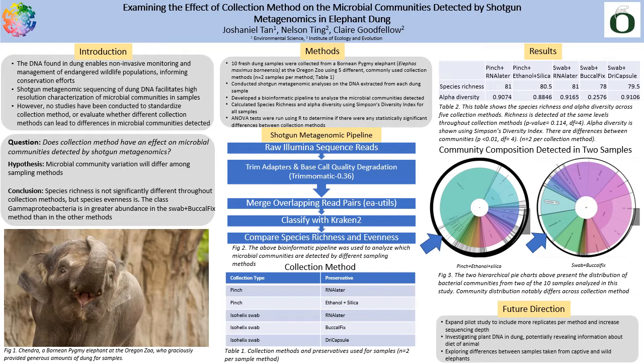Why do we want to quantify microbial communities from the dung of wild animals? In wild and endangered animals where invasive biological sampling is not possible, such as in elephants, analyses of gut microbial communities may be one of the few ways we can assess aspects of individual and population health. Collection of elephant dung is non-invasive, and elephant dung is widely available and easy to collect in the wild from otherwise inaccessible individuals and populations.